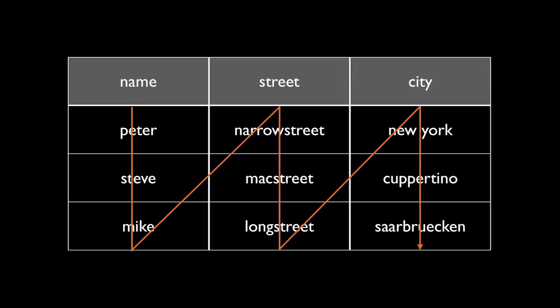Another major development at the time were column stores — a different way of organizing the data, which we will revisit many times throughout this lecture. The basic idea is, if you have a relational table, rather than storing the data row-wise, you store it column-wise. So on the storage device, you first store Peter, then Steve, then Mike, then Narrow Street, then Max Street, then Long Street, and so forth.